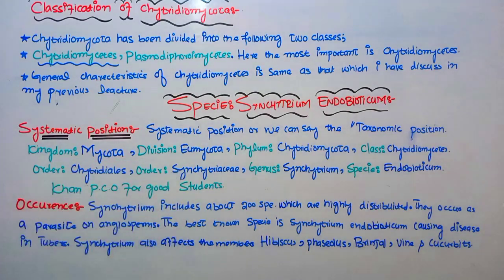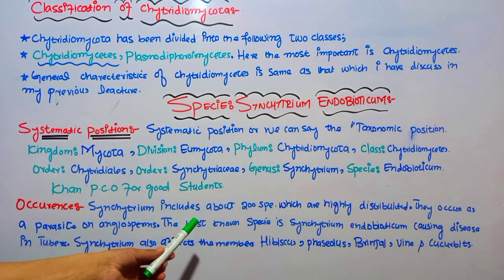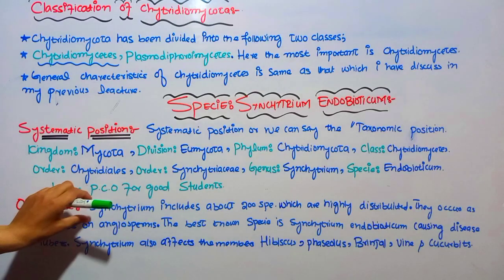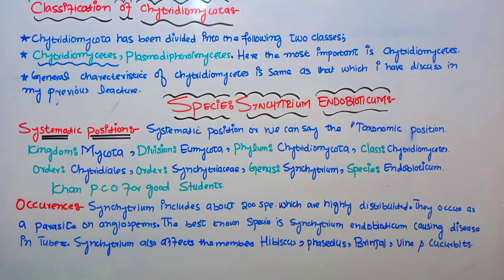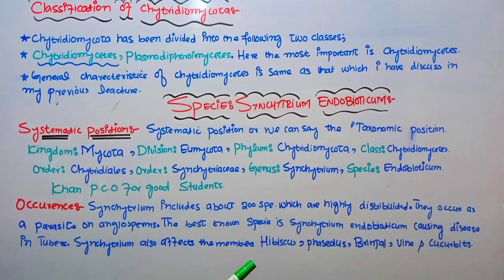Now talking about the occurrence of Synchytrium endobioticum: Synchytrium includes about 200 species. The genus Synchytrium has a total of 200 species, which are highly distributed everywhere. They occur as parasites on angiosperms.